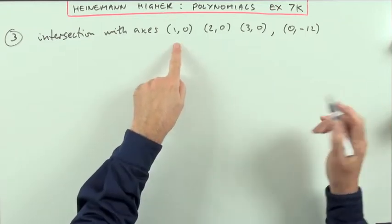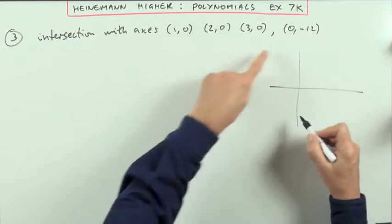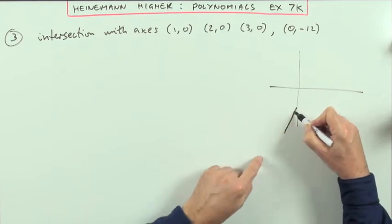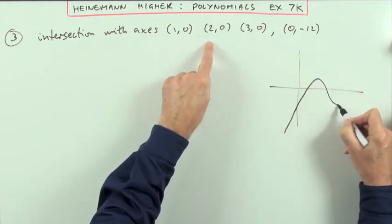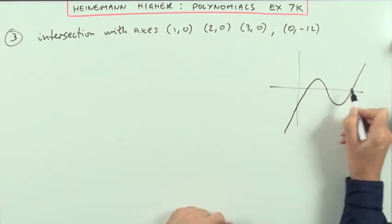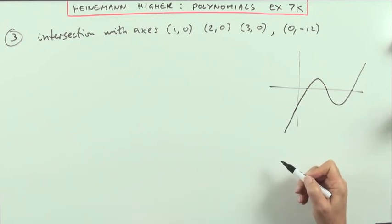Well, the first bit would be - you don't need a sketch, but it's going to be looking like this. It's going to come up through negative 12, cut at 1, cut at 2, and then cut back up at 3. I know those three points of intersection.